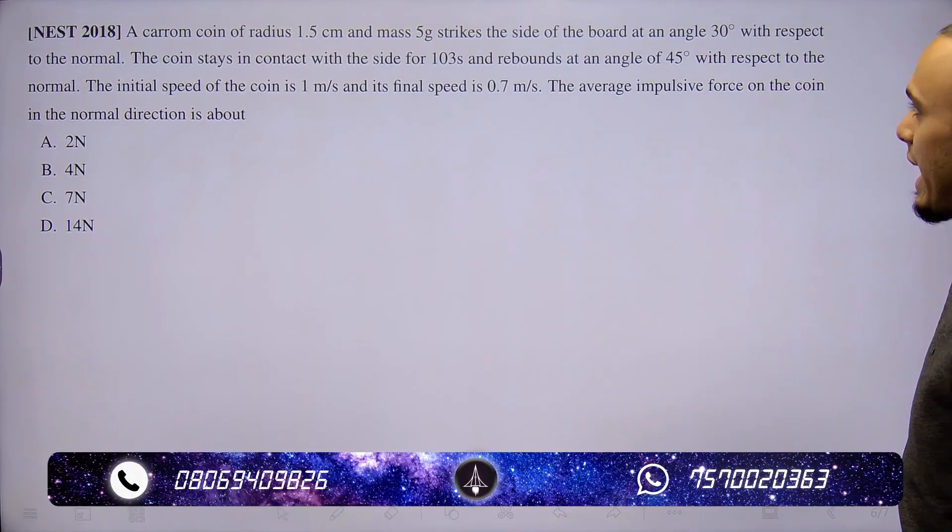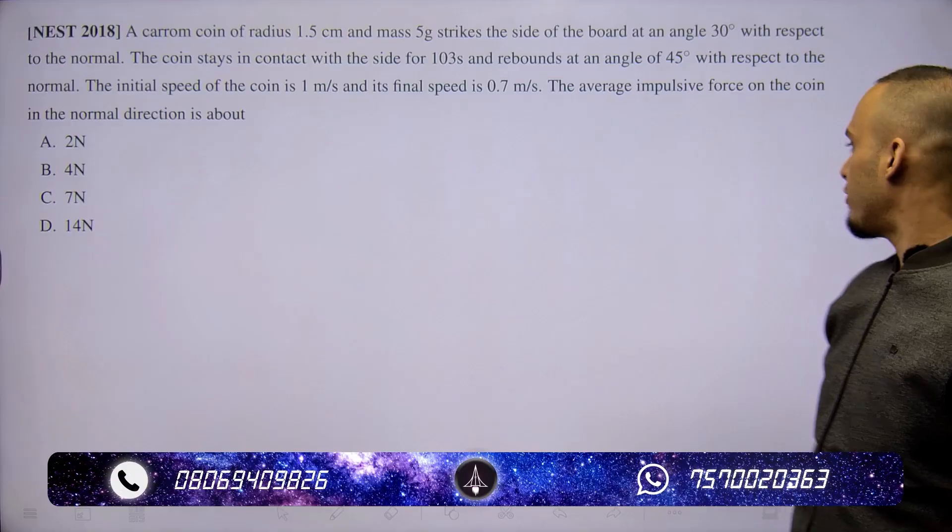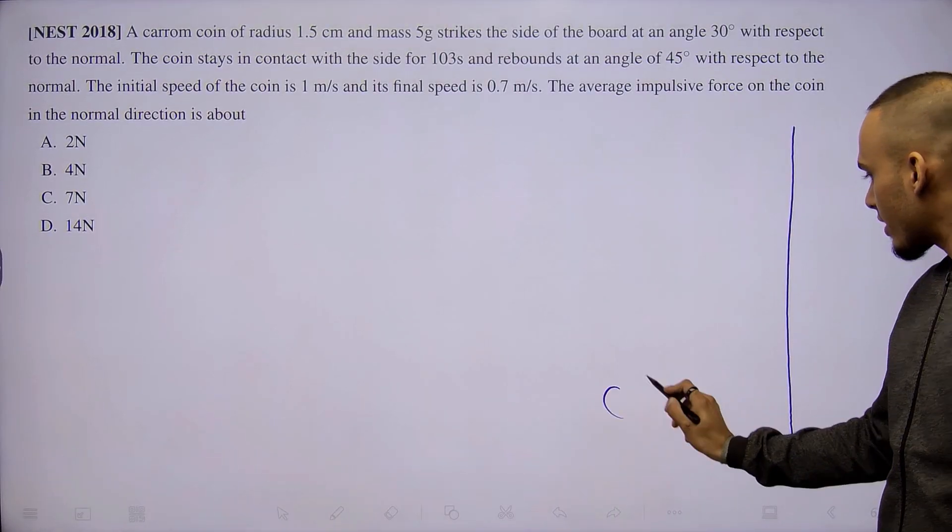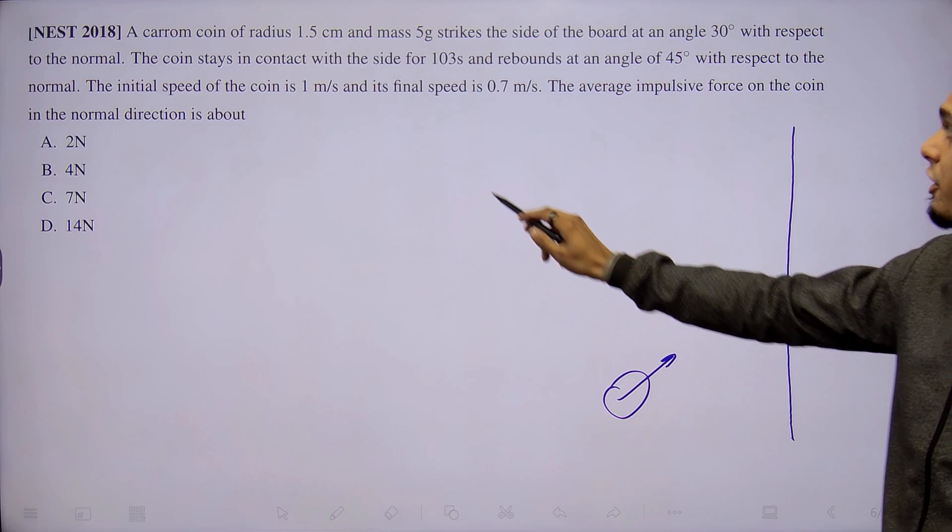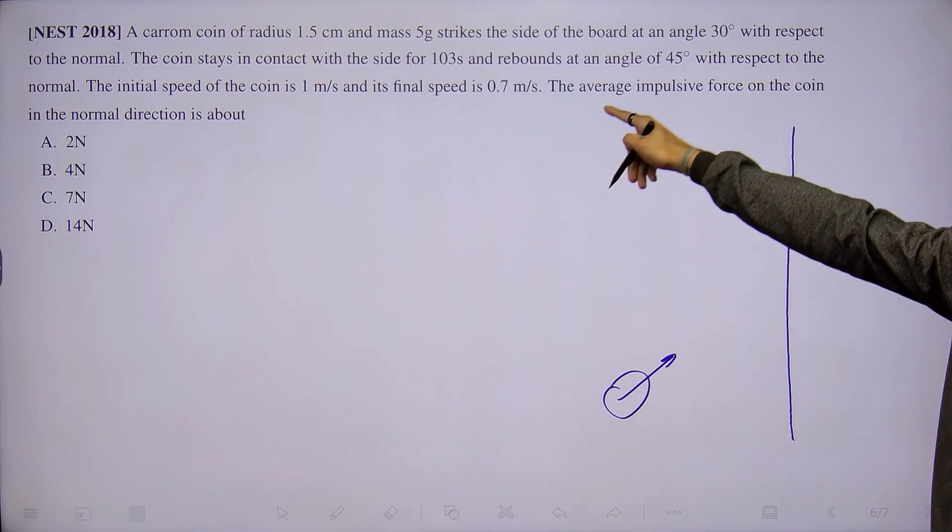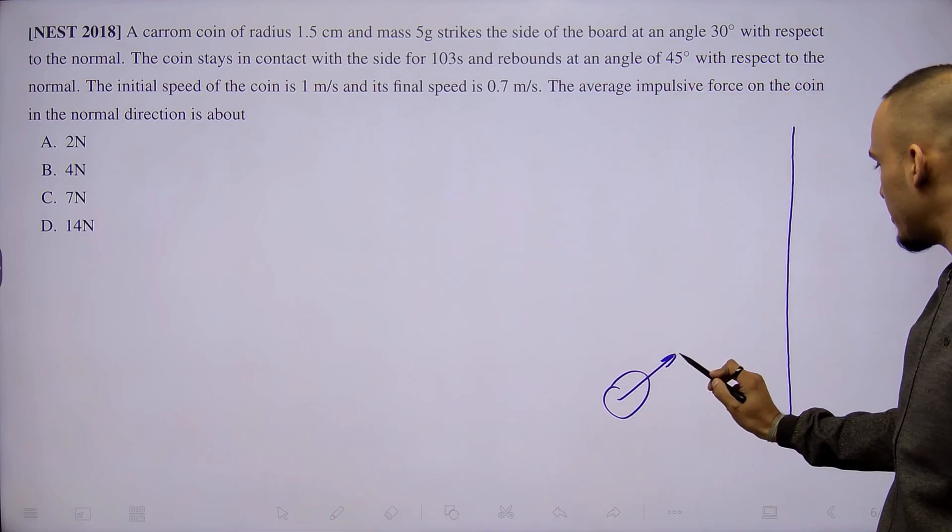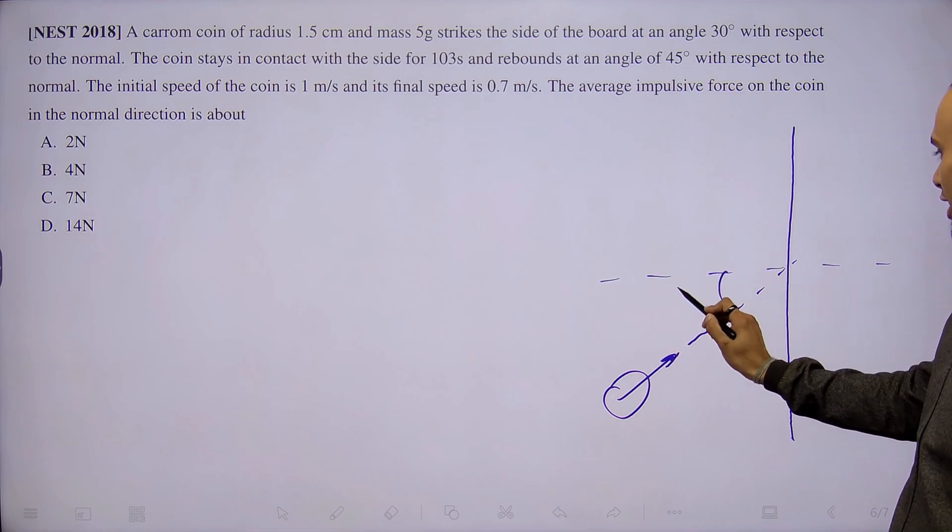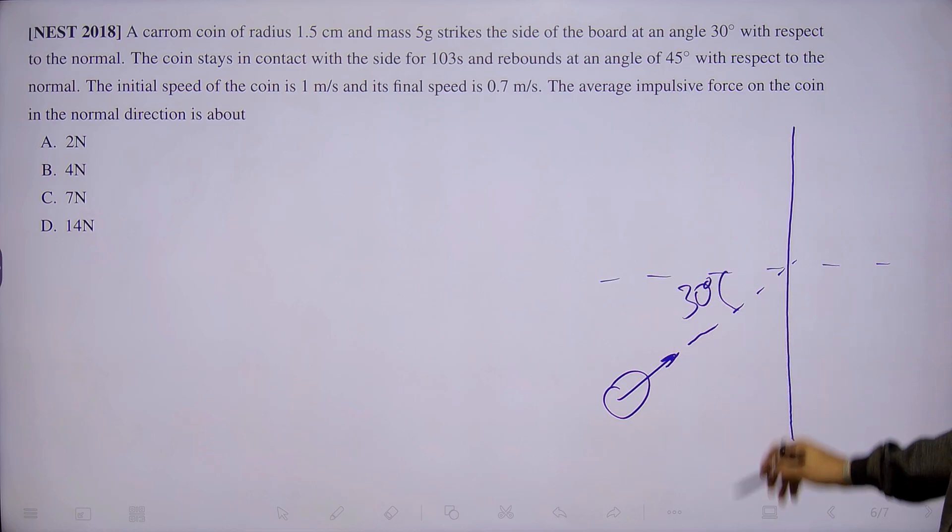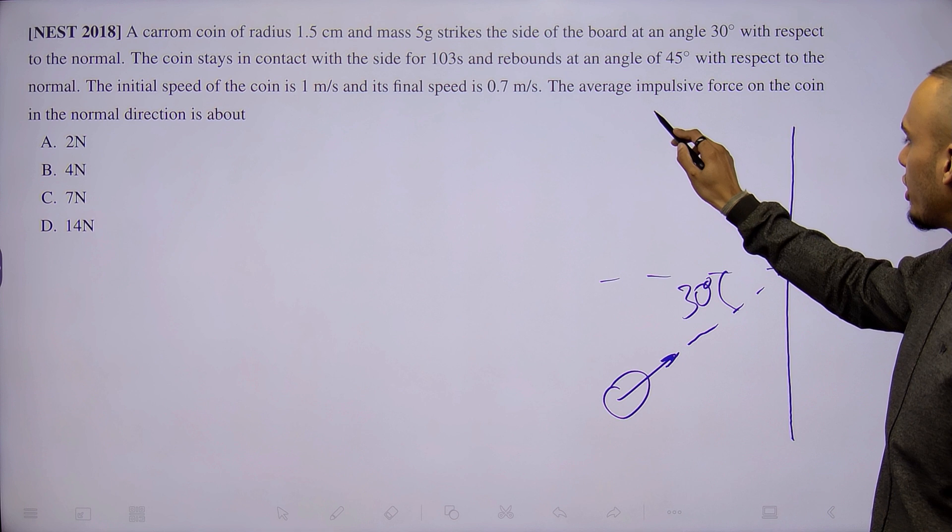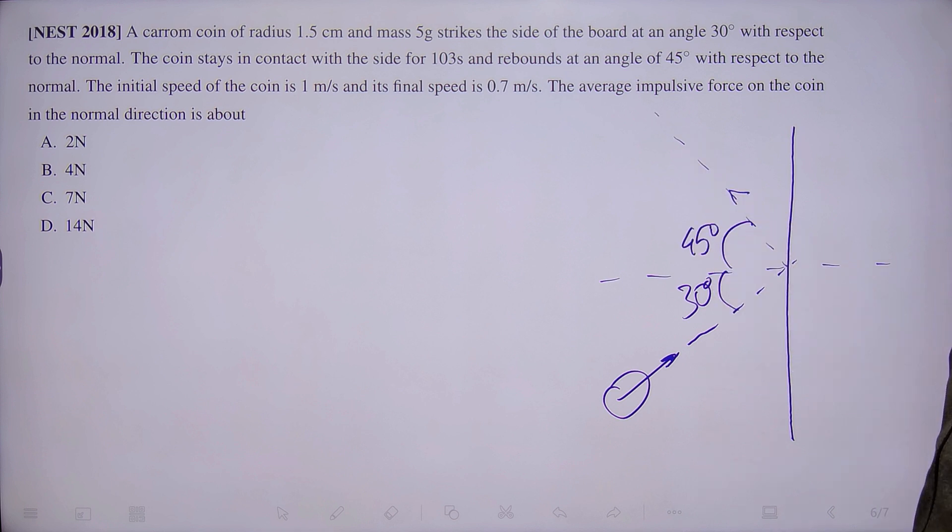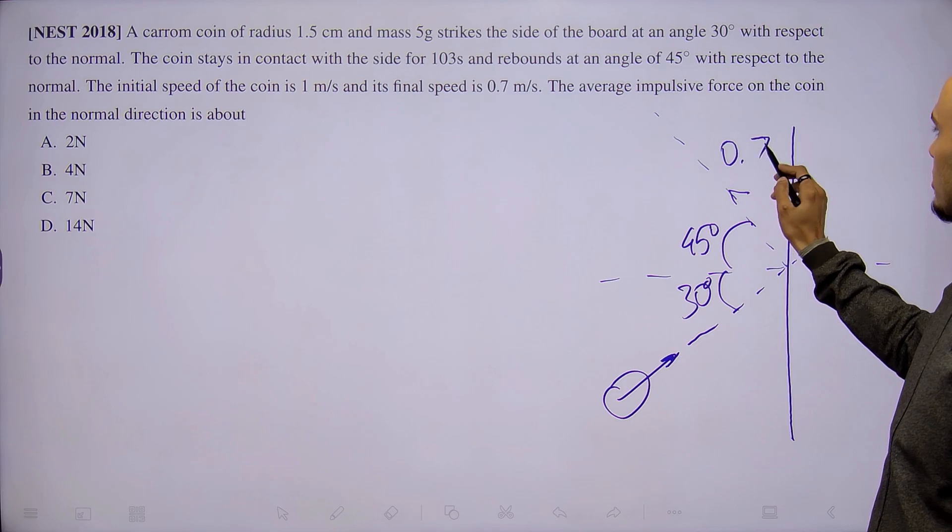This question talks about a carom coin that hits the side of a carom board. We can draw the schematic diagram like this. A coin is travelling with an initial speed of 1 meter per second and it hits the board at an angle of 30 degrees with the normal. We can draw this as the normal and the angle of contact is 30 degrees, and it rebounds at an angle of 45 degrees such that the final speed is 0.7 meter per second.